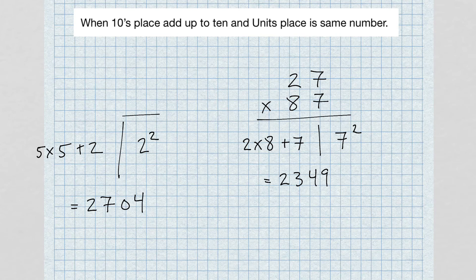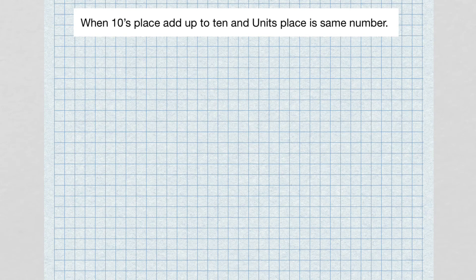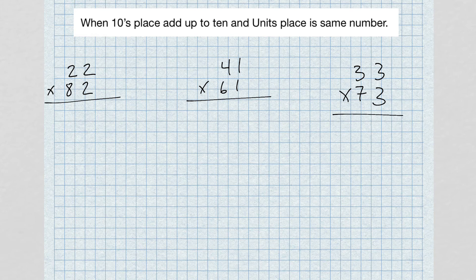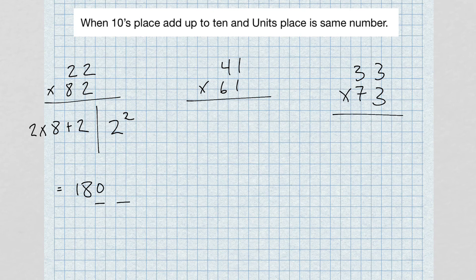I want to remind you that the right-hand side needs two digits. Consider problems like 22 times 82, 41 times 61, or 33 times 73. Let's try 22 times 82: left-hand side, two times eight plus two; right-hand side, two squared. Two times eight gives us 16; 16 plus 2 gives us 18. Two squared is 4, but we need two digits, so we write 04. Answer: 1804.